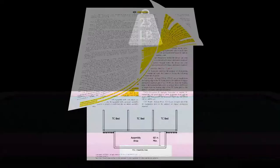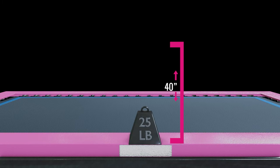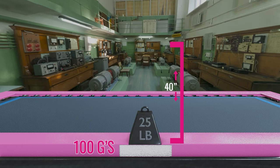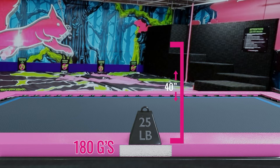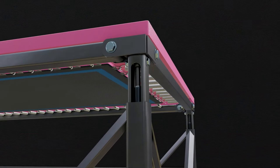ASTM standards only require trampoline pads to reduce shock to less than 100 g's in a 40-inch fall — and that's with materials tested in a lab under ideal conditions. The minimum standard goes up to 180 g's once it's installed in an actual park. It seems a bit silly to have to mathematically prove that shock absorbers will absorb shock.